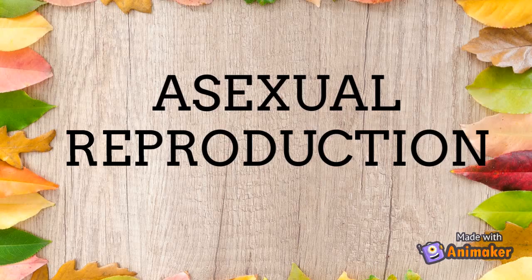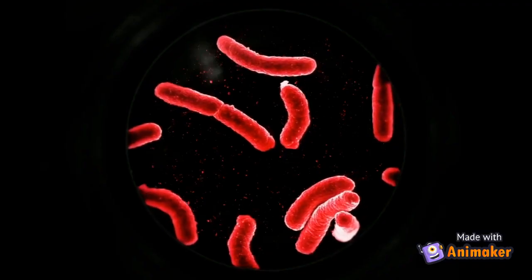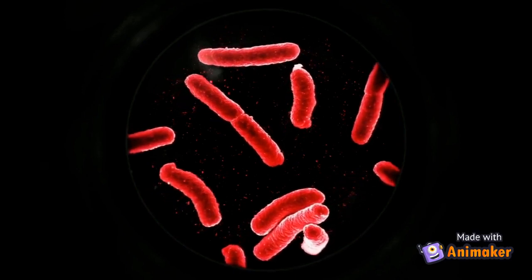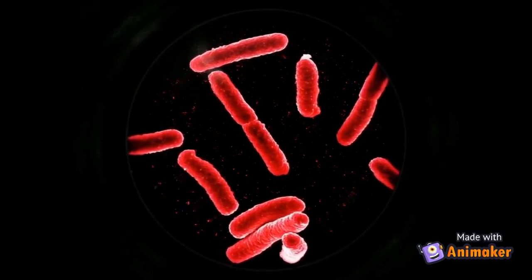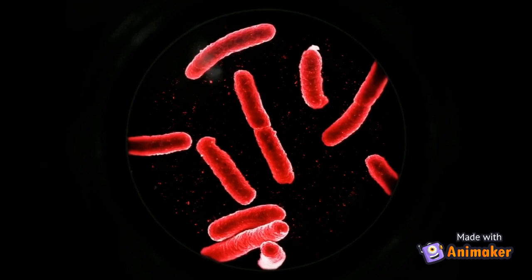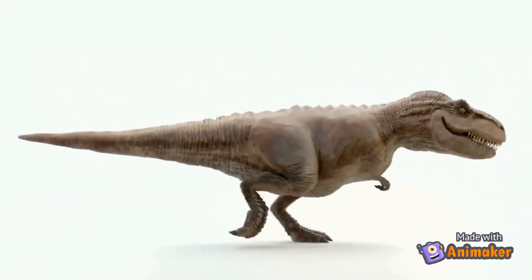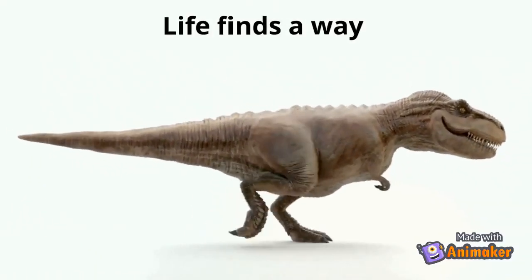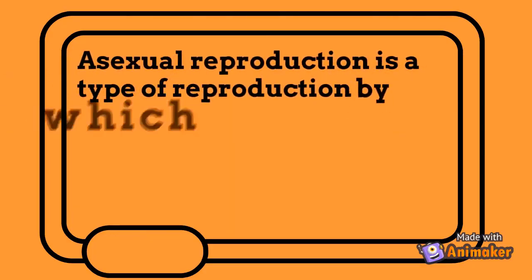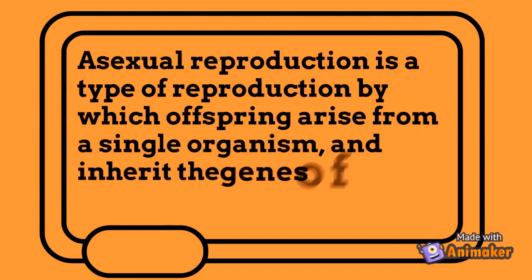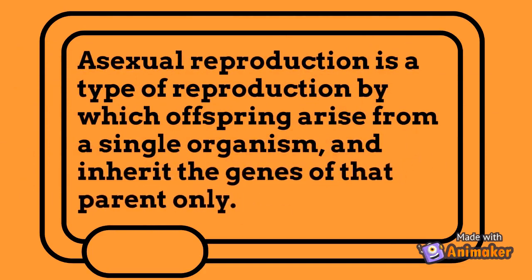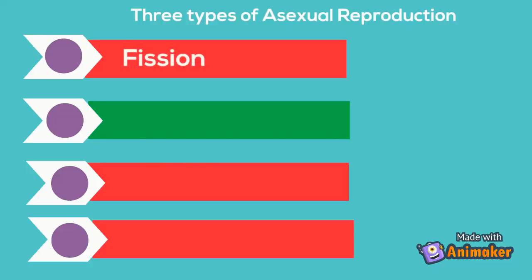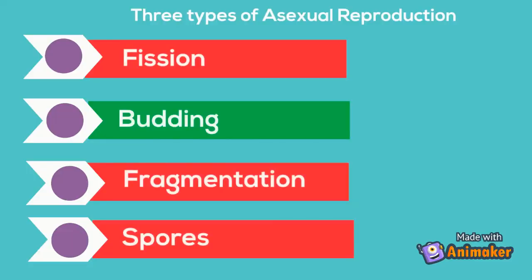Sexual reproduction is just one way that life is able to make copies of itself and continue to stay alive. Asexual reproduction is a type of reproduction by which offspring arise from a single organism and inherit the genes of that parent only. Let's take a look at four types: fission, budding, fragmentation, and spores.